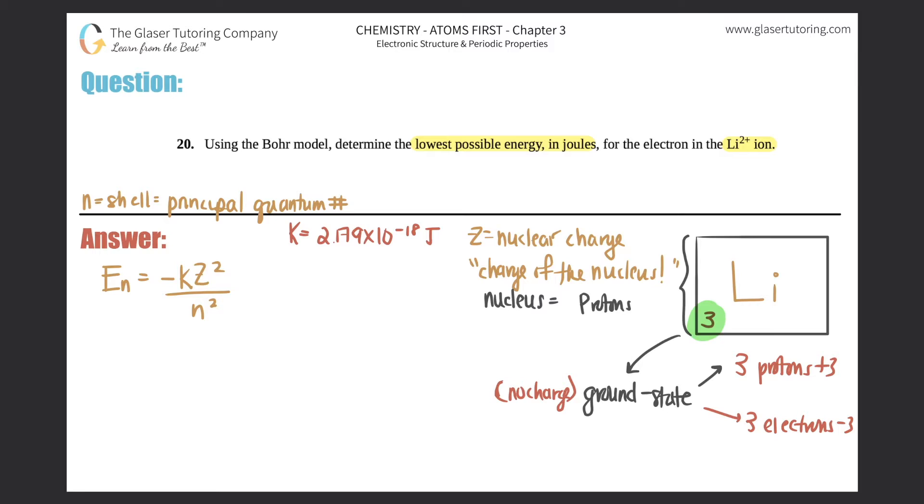So what would be the nuclear charge, the Z of this one? Well, it's just the protons. And the protons here are three. So in this case, the Z would be three or a plus three technically, because it's positive.